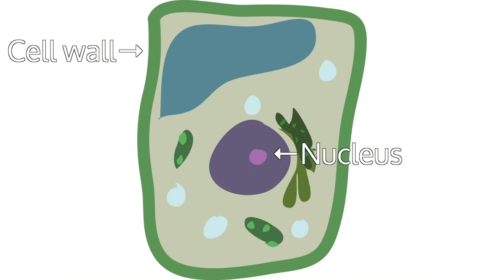Rigid cell walls allow the cells to be viewed under a microscope, and the iodine dyes the nucleus red, allowing it to be seen.